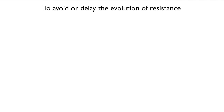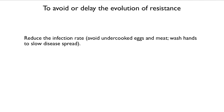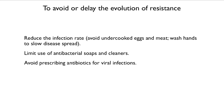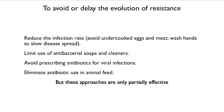How can we avoid or delay resistance evolution? We can reduce the infection rate — avoid undercooked eggs and meat, wash hands. We can limit the use of antibacterial soaps and cleaners, because they are subtherapeutic and exert strong selection for the evolution of resistance without killing off all the bacteria. We can stop prescribing antibiotics for viral infections, and we can eliminate antibiotic use in animal feed — which would of course cause the agricultural lobby to scream. These approaches are only partially effective for psychological, political, and economic reasons.